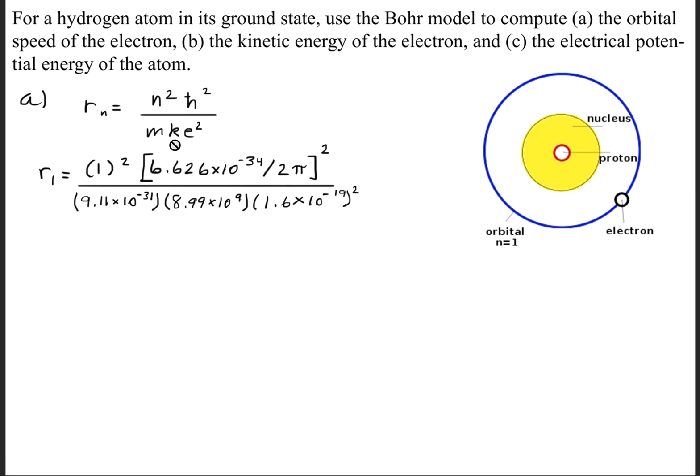The value for the Coulomb constant k is 8.99 times 10 to the ninth. The charge for an elementary particle, we use the variable e, is 1.6 times 10 to the negative 19th Coulombs. And we're going to square that value. This will give us a radius of 5.3096 times 10 to the negative 11th meters.